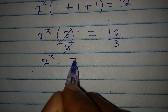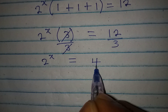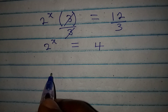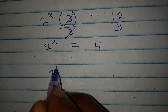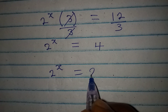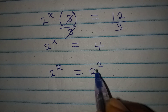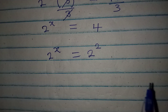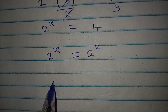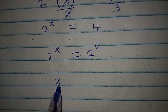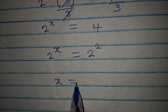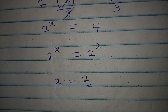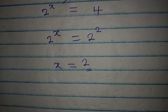What should we do from here? This means 2 to the power of x is equal to 2 to the power of 2, because 4 is 2 squared. The bases are the same, meaning that x is equal to 2.